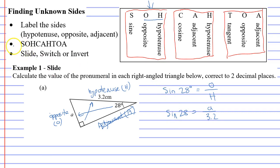Now, when you get to this point, you now go to your third dot point, which is slide, switch, or invert. All these questions are slide questions. And slide happens when a number is at the bottom. And when you have a number at the bottom of the fraction or the denominator, you slide it to the front of sine 28, which gives you 3.2 times sine 28 equals A.